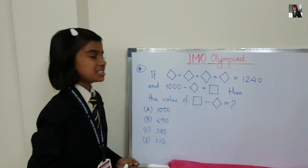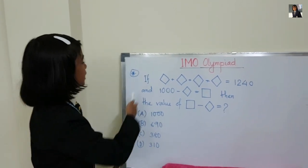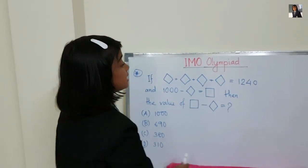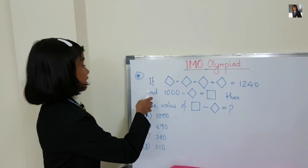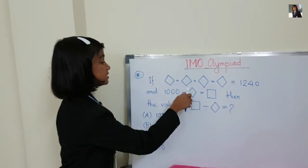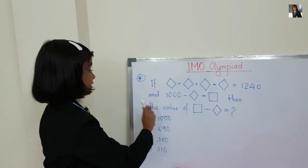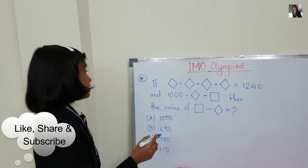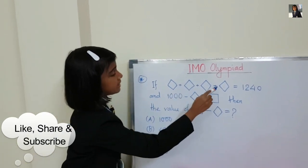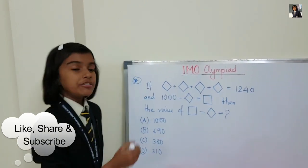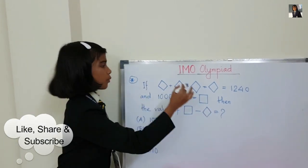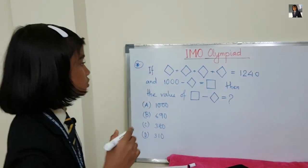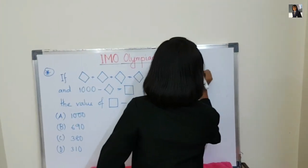Now let's move to this interesting question: if diamond + diamond + diamond + diamond = 1240, and 1000 minus diamond = square, then what is the value of square minus diamond? So first, diamond + diamond + diamond + diamond = 1240 means if we add four diamonds we get 1240. We have to find the value of one diamond, so we divide by four.